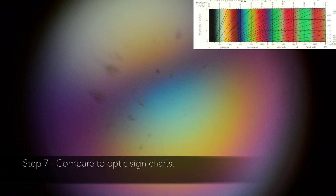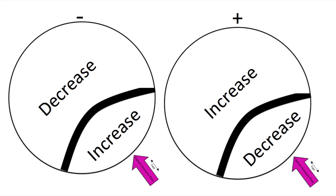Step 7. Compare to optic sign charts. In a biaxial negative mineral, we see an increase inside the curve of the isogyre and a decrease outside. In a biaxial positive mineral, we see a decrease on the inside and an increase outside. It is important that we align the isogyre as pictured because it needs to correlate to the direction that we insert the accessory plate.